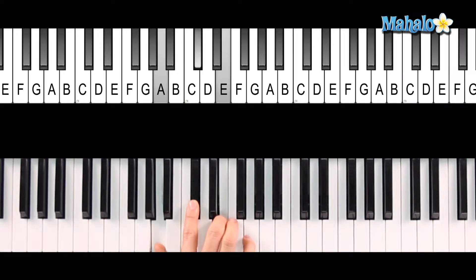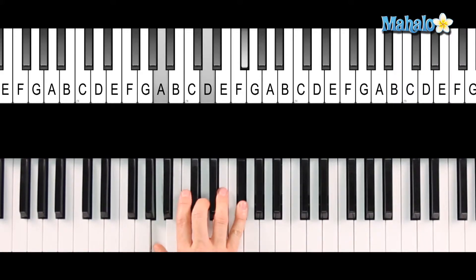A7 is gonna go to a D major chord. A7, D, V-I. It's called just a V-I chord progression.